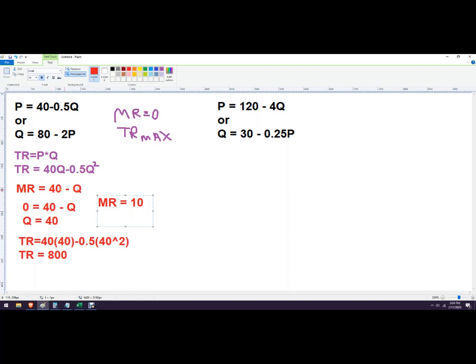Marginal revenue is 10, and then we'll see what the quantity is. So we're going to plug that back into here. So this would be 10 equals, we're just plugging into this function right here, 40 minus Q. And then Q equals 30. So when marginal revenue is 10, quantity is 30.